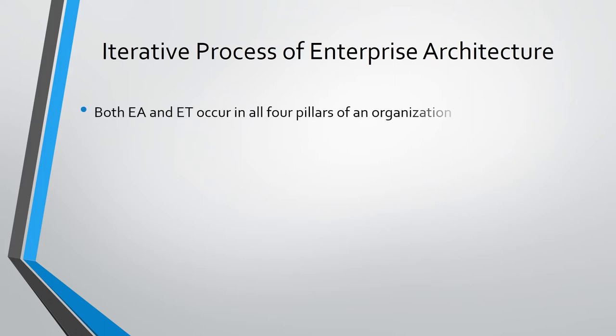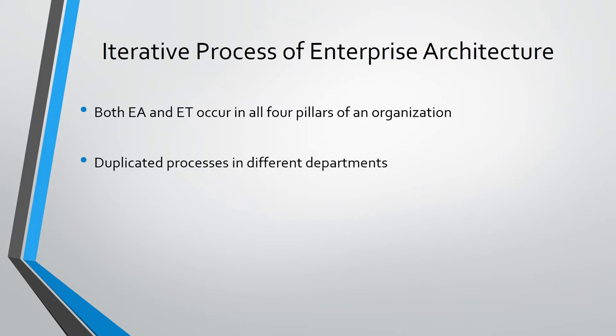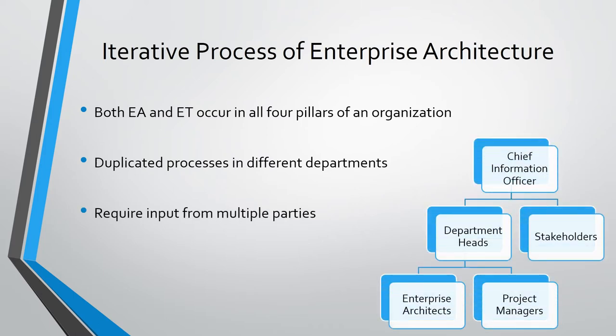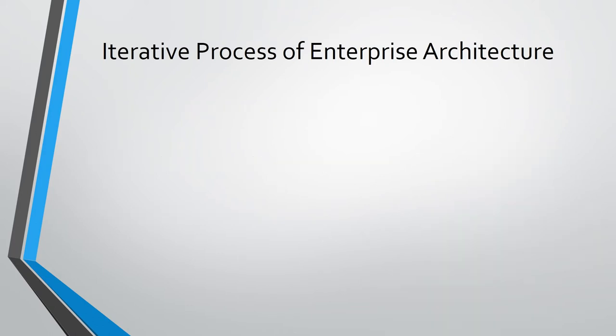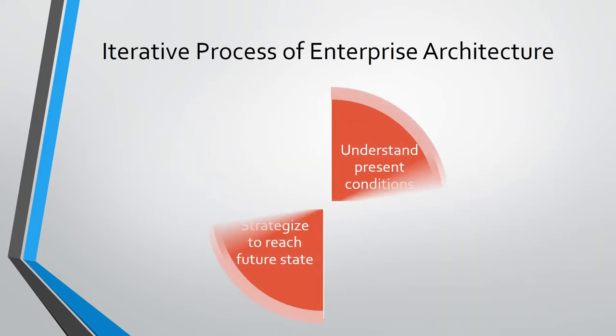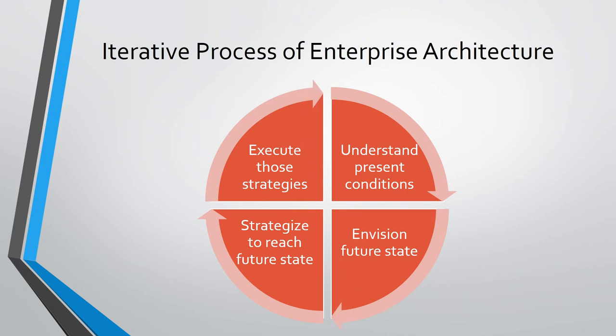Enterprise transformation applies within and across the four pillars of business, hence taking an iterative approach is necessary. This is because certain business processes are duplicated in various departments within the organization, and may involve multiple parties, from project managers to stakeholders. Taking an iterative approach affords the enterprise architect the ability to maneuver between the development of the four pillars easily, even if one is incomplete, then come back to the unfinished one at a later stage when there are more data or resources.